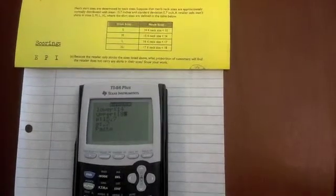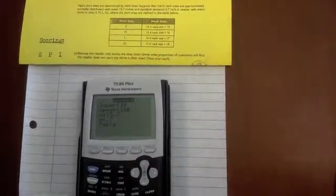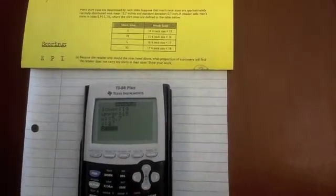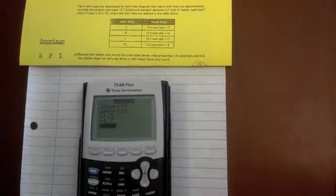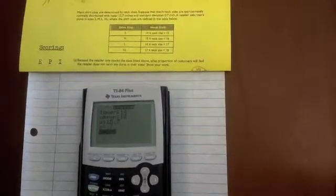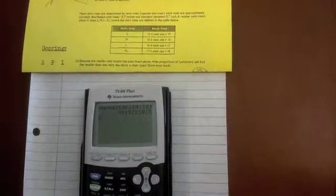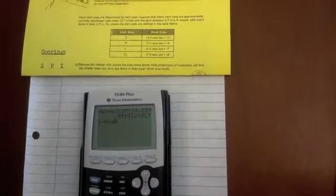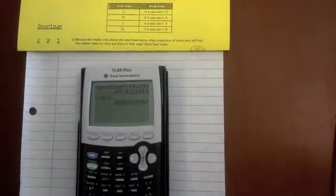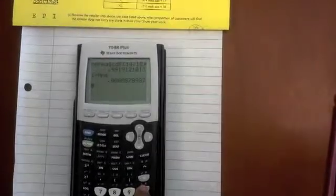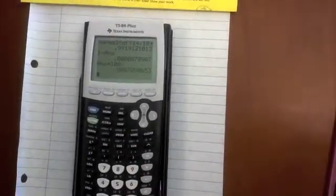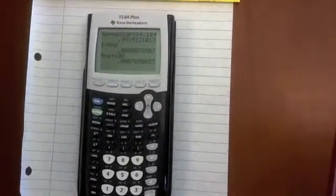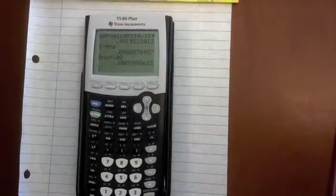Your mean is 15.7, and that's given. And your standard deviation is 0.7, which is also given. At this point, you're solving for all the proportion of neck sizes that they do carry. So if I solve for it, it says it's 0.9919, and you do 1 minus that number to find what they don't carry, and you get 0.00808. And to find the percentage, you multiply times 100. So you get 0.8%. So there's 0.8% of customers will not find their shirt size at the store.